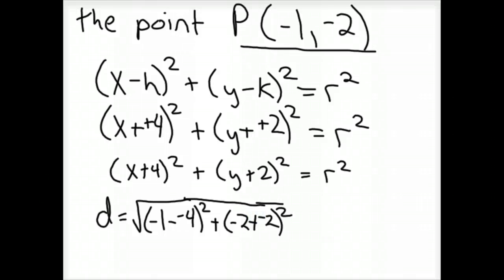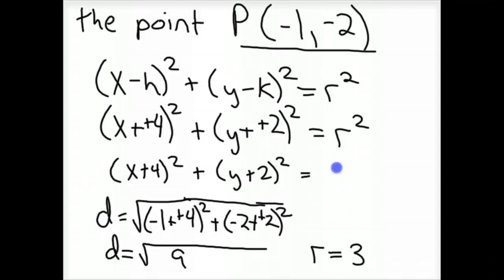So, you go plus plus, well this becomes 0. And so, you have d equals the square root. Well, this is also plus plus, that's 3, 3 squared is 9. Plus, negative 2 plus, plus 2 is 0. So, you've really got the square root of 9 for the distance. So, your radius is 3, because that's the square root of 9. So, now you can go back to your equation. I'll erase the r squared, and you could put in a 9 there. And hopefully I have that correct.